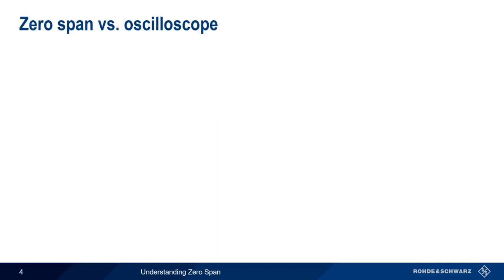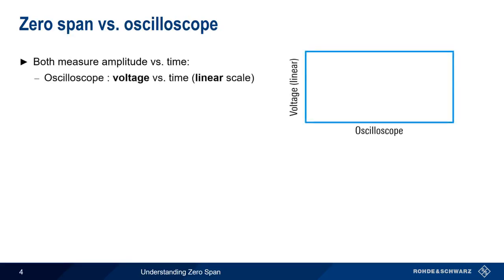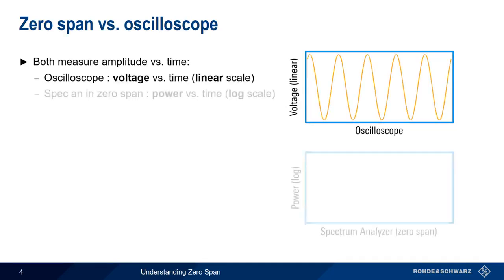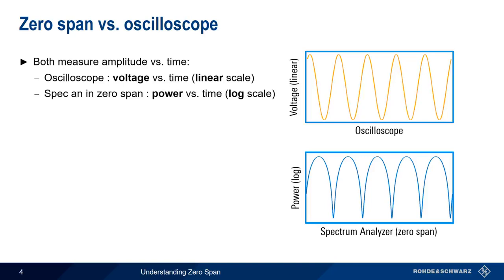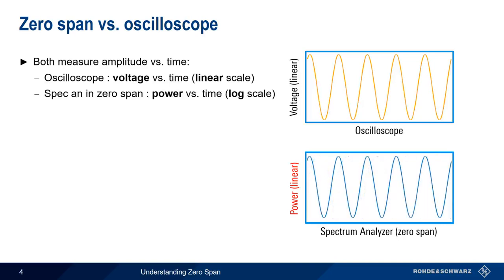If Zero-Span reminds you of an oscilloscope, there's a good reason why. Both produce amplitude versus time results. However, there are two important distinctions to keep in mind. First, oscilloscopes typically measure voltage versus time on a linear scale, but with a spectrum analyzer in Zero-Span mode, we're measuring power versus time, usually on a log scale. A simple sinusoidal signal can look different when viewed on an oscilloscope versus a spectrum analyzer in Zero-Span mode. Changing the spectrum analyzer vertical scale to linear instead of log will usually produce a more normal-looking sinusoid.